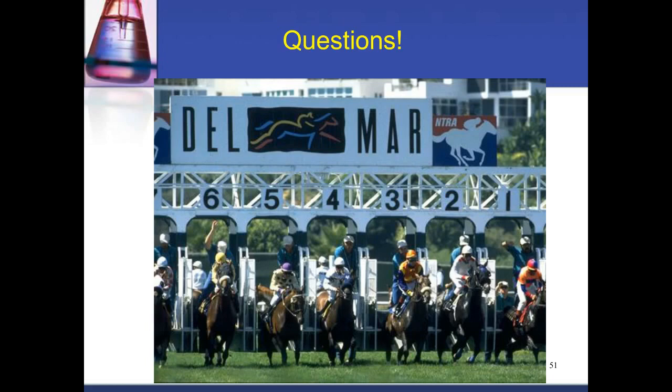Regarding whether all 600 compounds are analyzed simultaneously in a mix: no. We tend to put 25 to 50 compounds in a mix at a time. Fortunately, in real samples we rarely see more than one or two compounds at a time. Mixing 600 compounds simultaneously would create interferences and not represent the real-world environment, so we stick with 25 to 50 compounds at a time for validation.